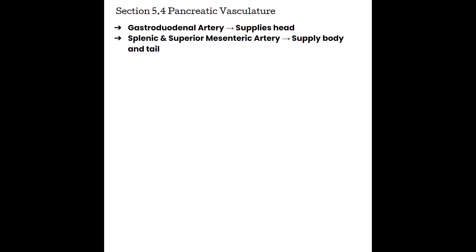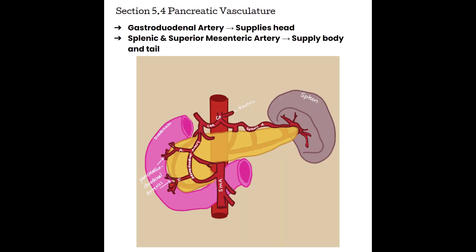Section 5.4, Pancreatic Vasculature. The pancreas is a highly vascularized structure; however, we cannot see most of these blood vessels, so they hold very little importance to ultrasound in terms of visualization and diagnosis. The big two that you need to know are that the gastroduodenal artery is going to supply the head of the pancreas, and the splenic and superior mesenteric artery are going to be responsible for supplying the body and the tail with blood.